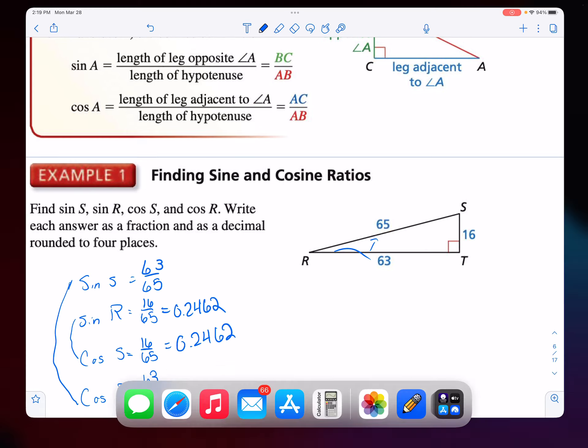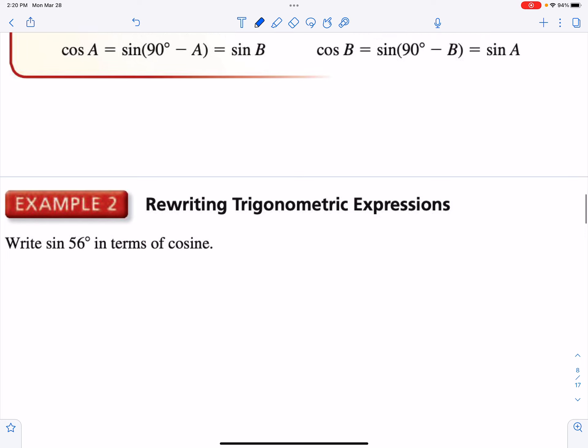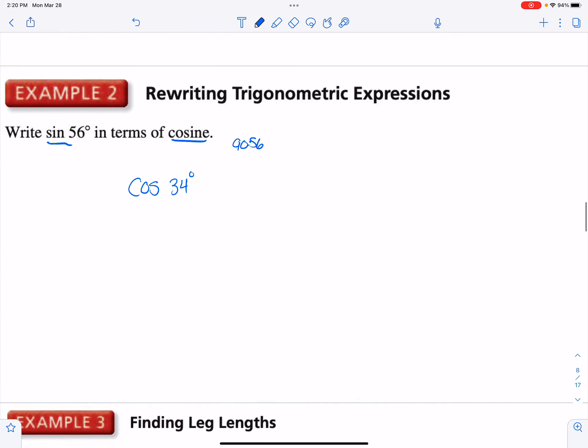Our core concept box here kind of helps us with what we just talked about. It says if I have the sine of one acute angle, it's going to be equal to the cosine of the other acute angle. So some of your problems are just this simple. We are given the sine of 56. They want us to write it in cosine. So if I want to write it in terms of cosine, I'm going to say it's the cosine of whatever 90 minus 56 is. That's equal to the cosine of 34.